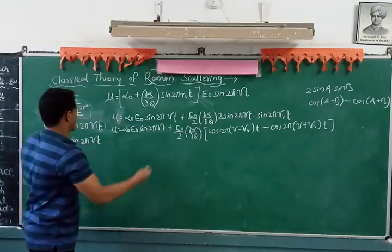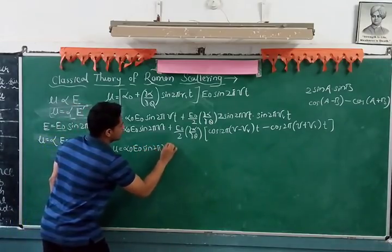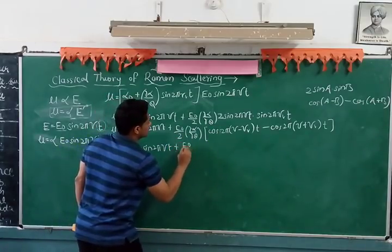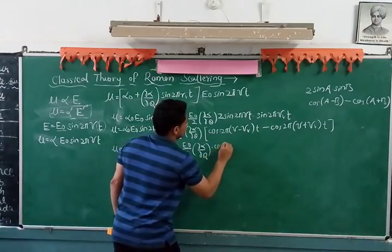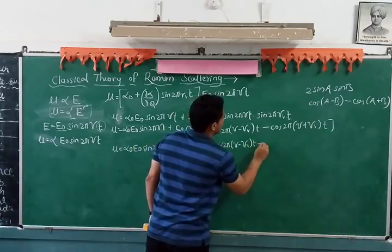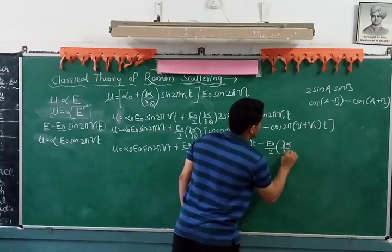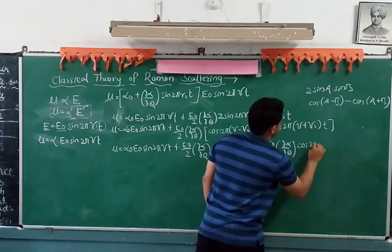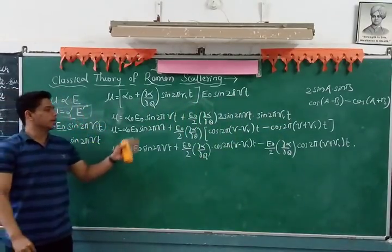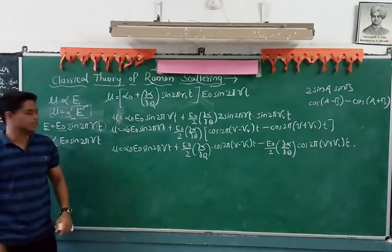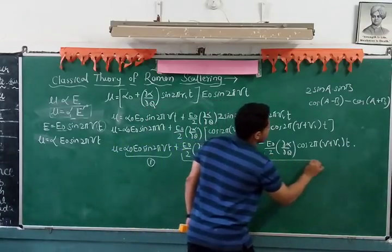So the final expression is: μ = α₀E₀ sin(2πνt) + (E₀/2)(∂α/∂q){cos[2π(ν − νᵥ)t] − cos[2π(ν + νᵥ)t]}. Let this be the first term, the second term, and the third term respectively.